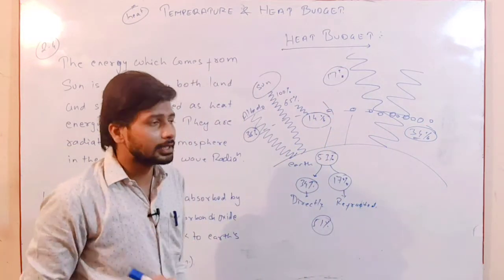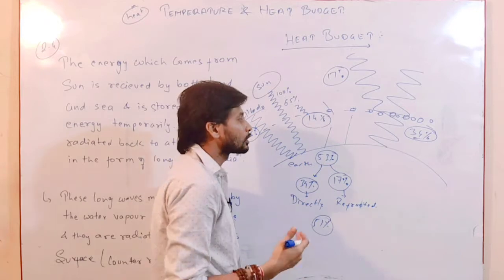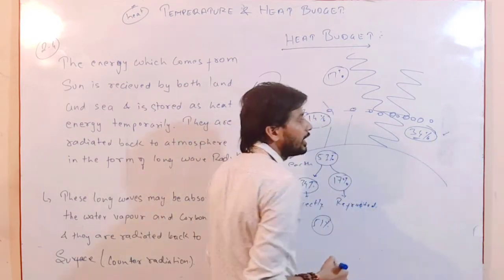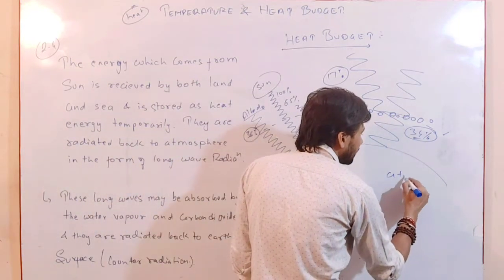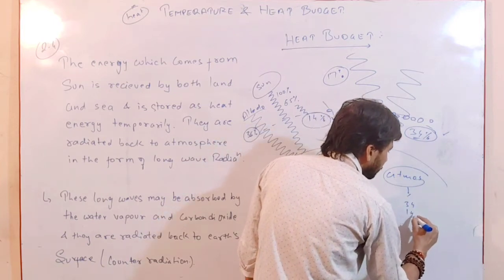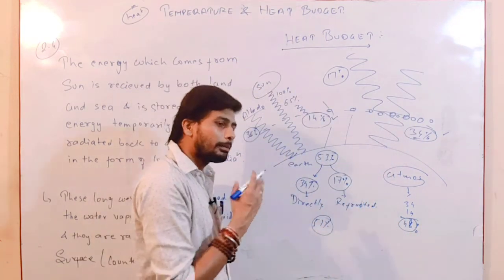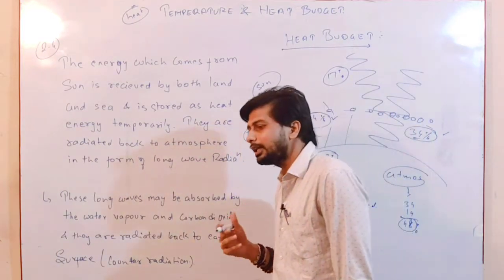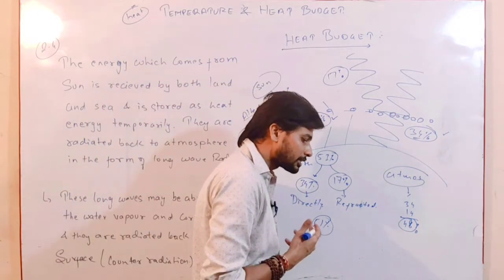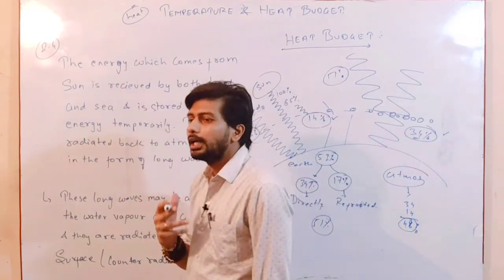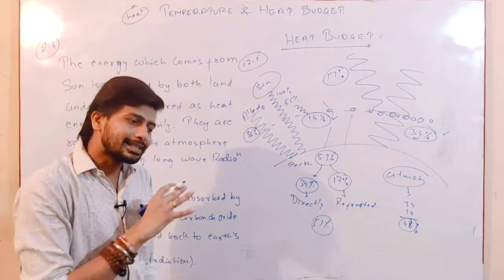From this we can see — as I mentioned at the beginning — that the main source increasing atmospheric temperature is the Earth's radiation, not the Sun's directly. The atmosphere receives 34% from Earth and only 14% from the Sun, so the total atmosphere heat is 34 + 14 = 48%. This is a huge amount. Geo-engineers are working on how to reduce this percentage.